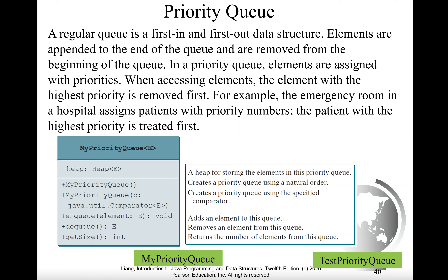For example, the emergency room in a hospital assigns patients with priority numbers. The patient with the highest priority is treated first.